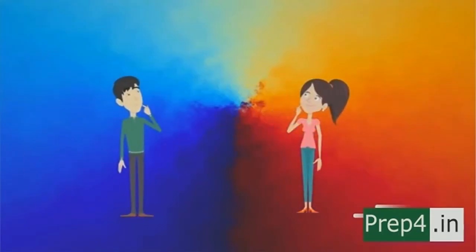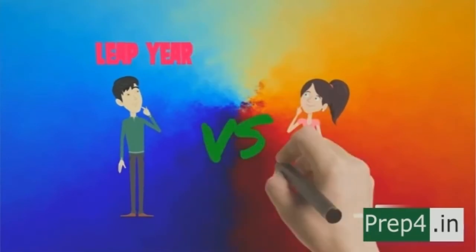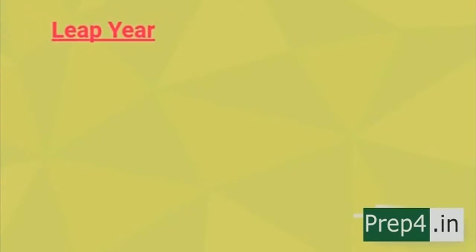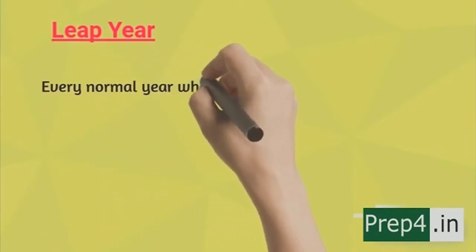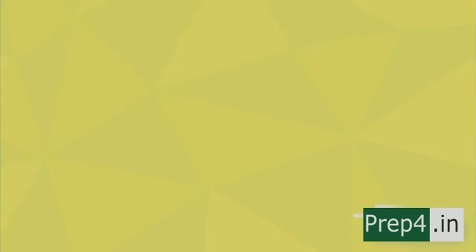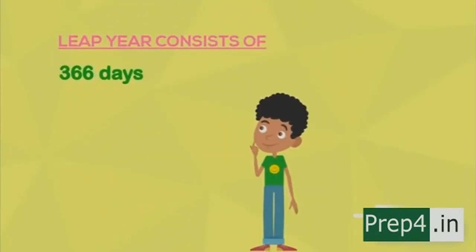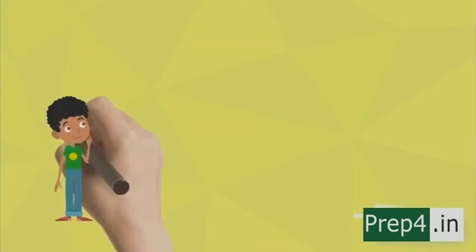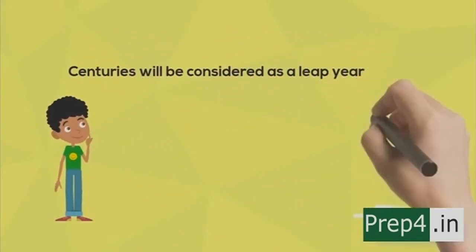Now let's have a comparison between a leap year and an ordinary year. Every normal year which can be divided by four will be a leap year. A leap year has 366 days and 52 weeks, and consists of two odd days. But in the case of a normal year, it has only one odd day. Also, centuries will be considered a leap year only if they can be divided by 400.